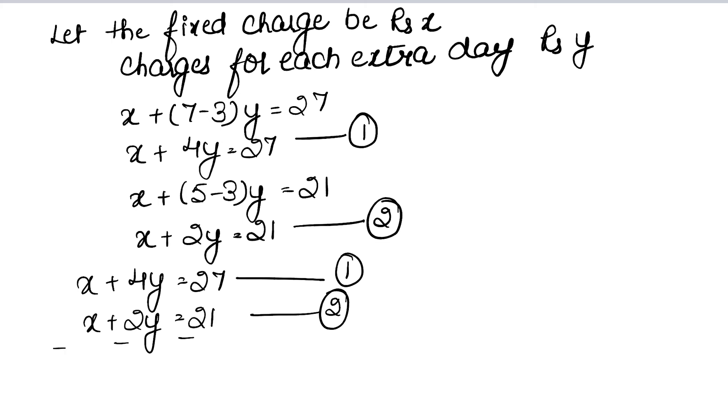See, the signs will change. The x cancels out. So this becomes 2y equals 6. Because of the opposite signs, it gets subtracted. So y becomes 6 upon 2, that is 3.